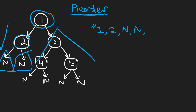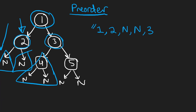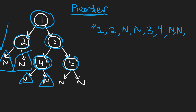Now we start going down the right subtree. The first value is three, so we add that. We do pre-order traversal on three's left subtree. The four node is the same as two — it's a node with no children — so we add four and then two null nodes, N N, indicating four has no children. Then for the right subtree of three, we add five with another couple of empty null nodes. Now we're done — that was the entire serialized string.